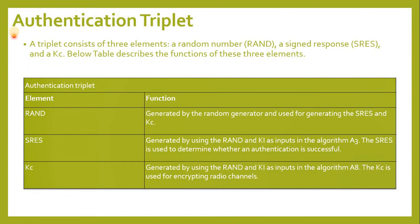Authentication triplet. A triplet consists of three elements: a random number called RAND, a signed response called SRES, and a KC. RAND is generated by a random generator and used for generating the SRES and KC. SRES is generated by using RAND and the key as inputs in algorithm A3. The SRES is used to determine whether authentication is successful.